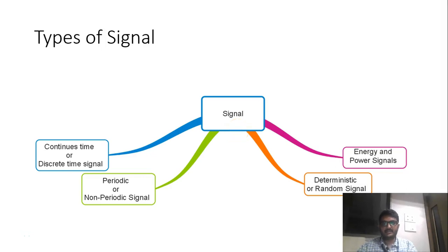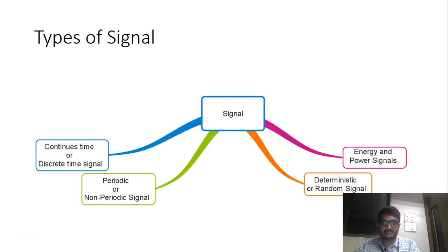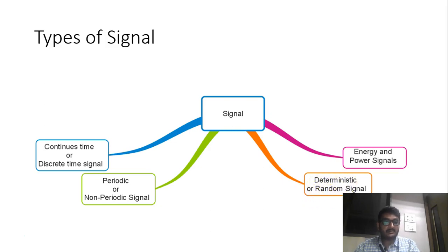Hello friends, welcome back. Last time we had seen what is a signal. This time we are going to see what are the types of signals. Signals can be classified depending upon various parameters. For example, a signal can be a continuous time or a discrete type signal. Depending upon its periodicity, it can be a periodic signal or a non-periodic signal. A signal can be deterministic or random, or it can be distinguished as an energy signal or a power signal.